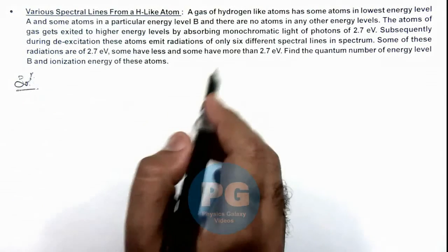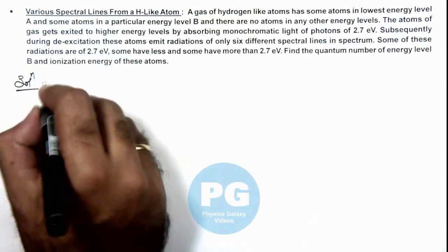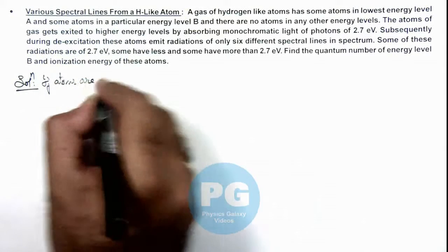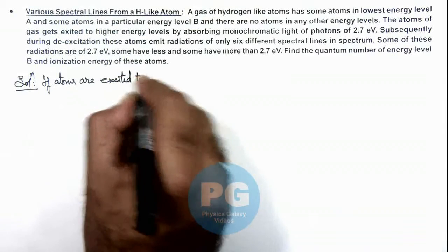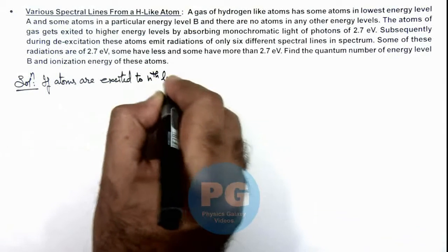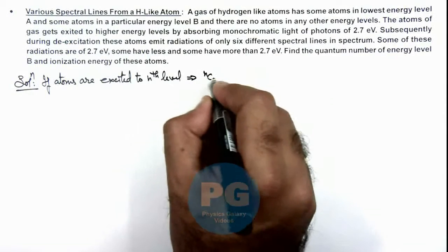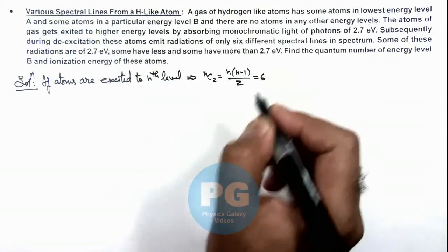6 spectral lines are total emitted. So we can write if atoms are excited to nth level, this implies we can write nC2, which is n multiplied by n minus 1 by 2, should be equal to 6.